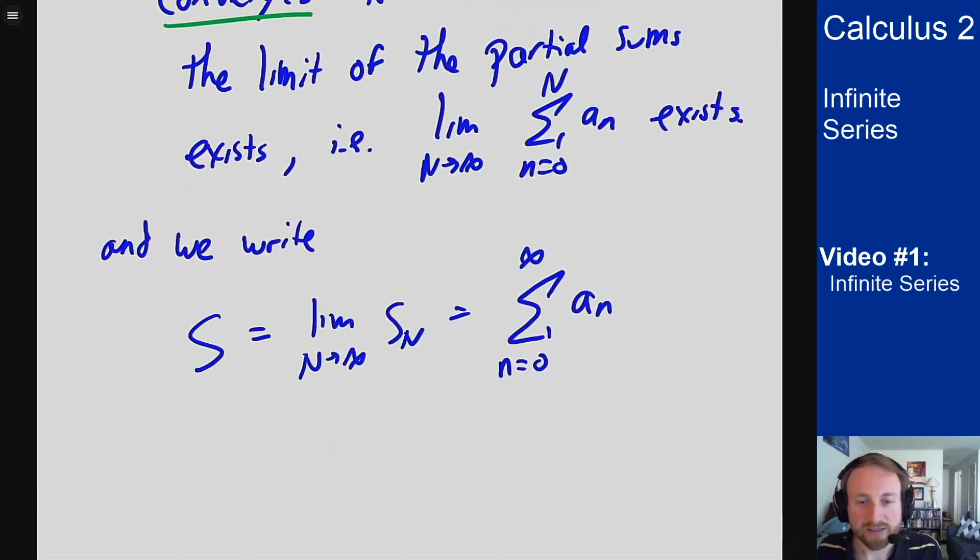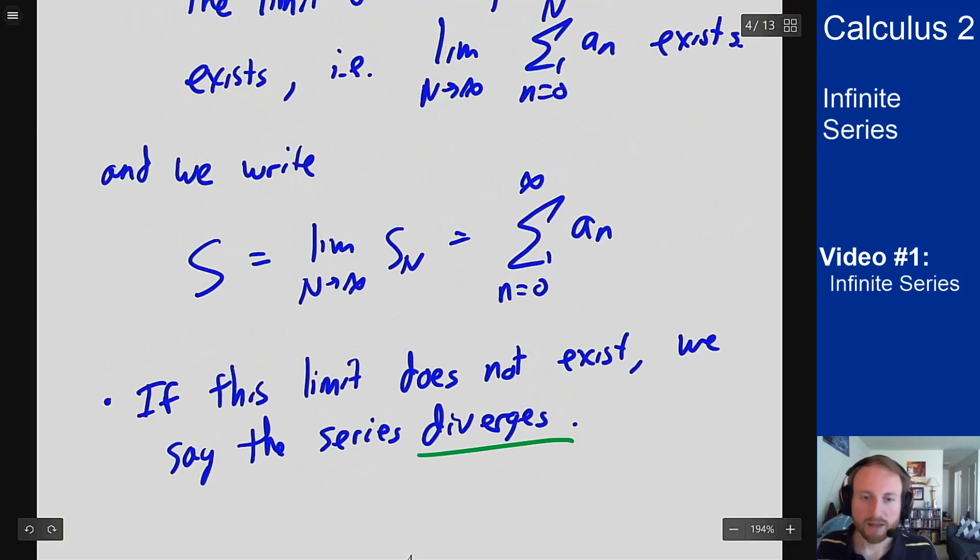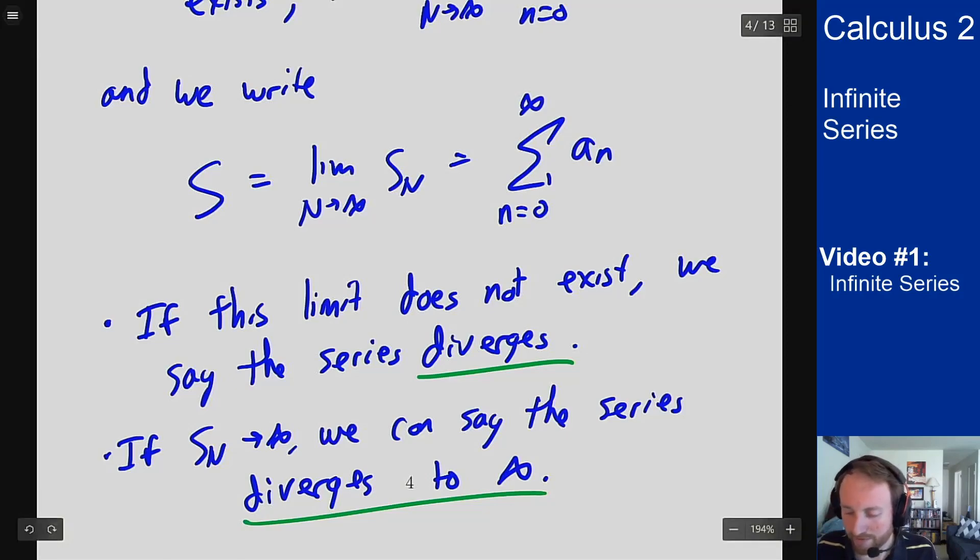If the sum does not exist, we say the series diverges. And if this sequence of partial sums goes to infinity, we can say the series diverges to infinity to be more specific in how the limit does not exist. And so that's the idea of convergence and divergence. One other point about this...